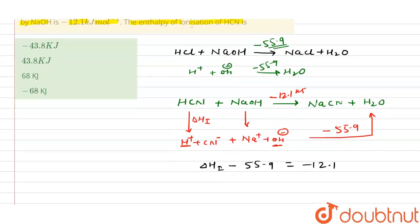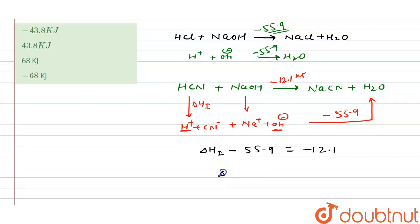So enthalpy of ionization will be equal to 55.9 minus 12.1. This value is coming out to be 43.8 kilojoules with positive sign. So that means option B is the right answer. I hope you understand this concept, thank you.